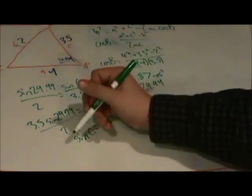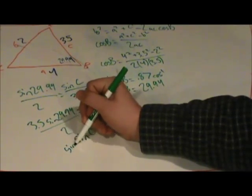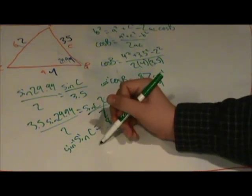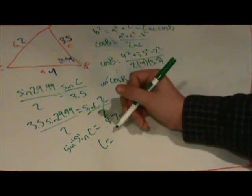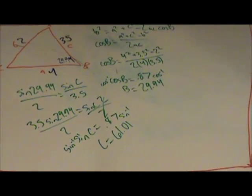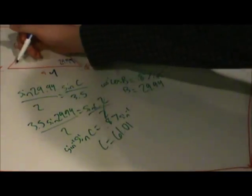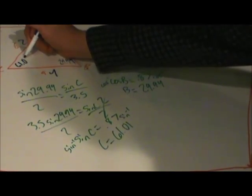Now, we'll arc sine both sides to find the value of c, which is 61.01. So we can fill that in for c at 61.01.